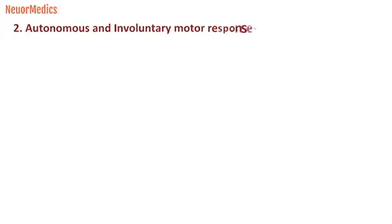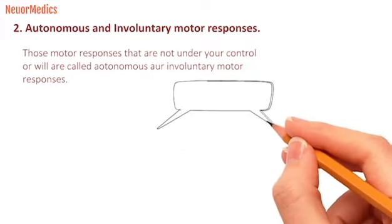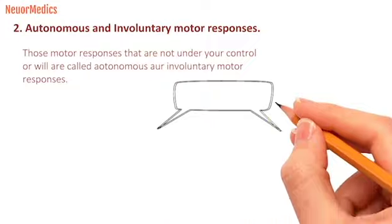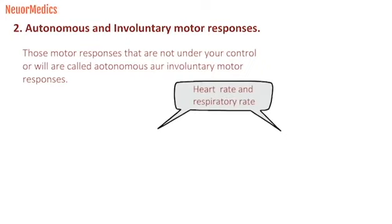Let's talk about the autonomic and involuntary motor responses. Those motor responses that are not under your control or will are called autonomic or involuntary motor responses. For example, the motor responses which cannot be controlled — like secretions of glands, movement of smooth muscles, the respiratory process, and heart rate — are not under your control. So these are involuntary, or autonomic, motor responses.